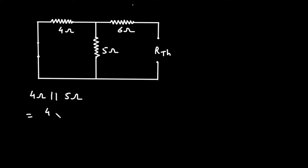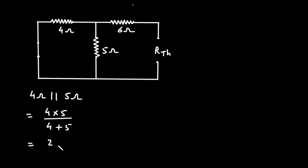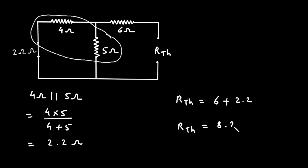So we can write 4 ohm parallel with 5 ohm. It is equal to 4 into 5 divided by 4 plus 5, which gives 2.2 ohm. Now this 2.2 ohm is in series with 6 ohm. So RTH is equal to 6 plus 2.2, therefore RTH is equal to 8.2 ohm.